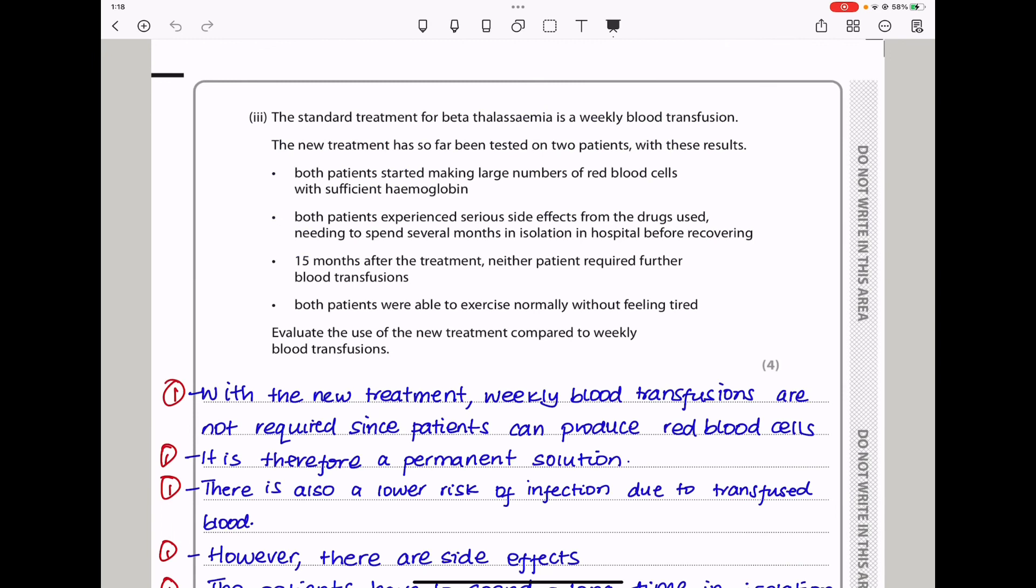Let's continue. The standard treatment for beta thalassemia is a weekly blood transfusion. The new treatment has so far been tested on two patients with these results. Both patients started making large numbers of red blood cells with sufficient hemoglobin. And both patients experienced serious side effects from the drugs used, needing to spend several months in isolation in hospital before recovering. 15 months after the treatment, neither patient required further blood transfusion. Both patients were able to exercise normally without feeling tired.